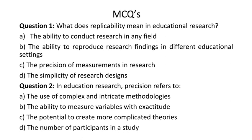Question 2: In education research, precision refers to — A. The use of complex and intricate methodologies. B. The ability to measure variables with exactitude. C. The potential to create more complicated theories. D. The number of participants in a study. Correct answer is B: the ability to measure variables with exactitude.